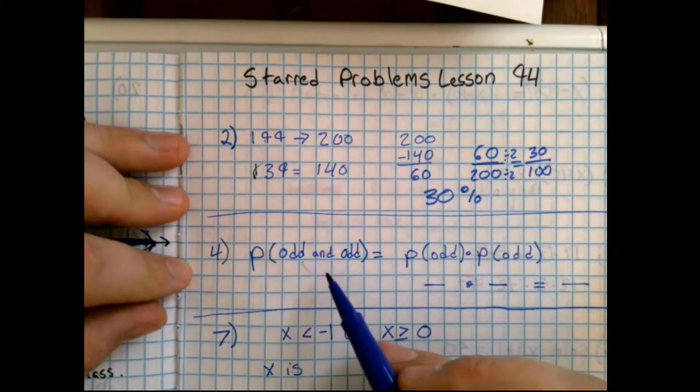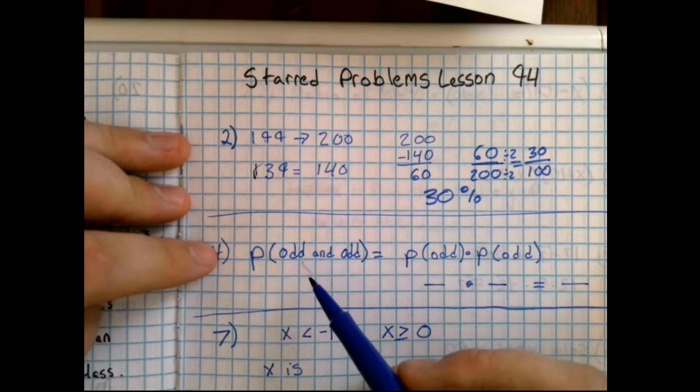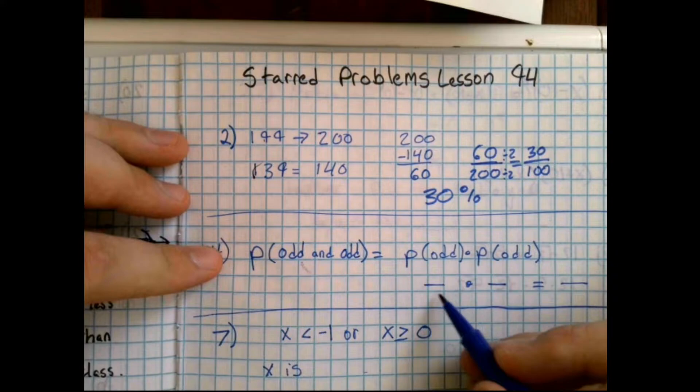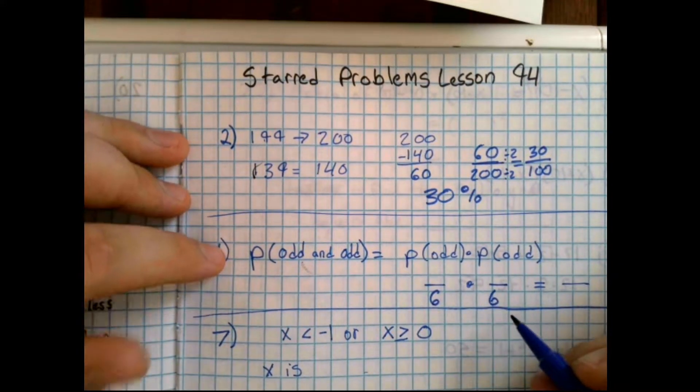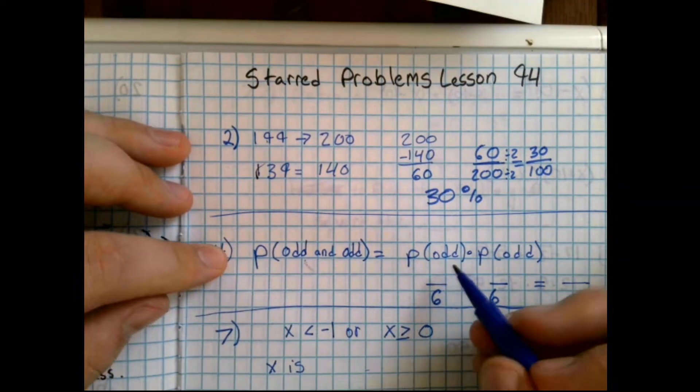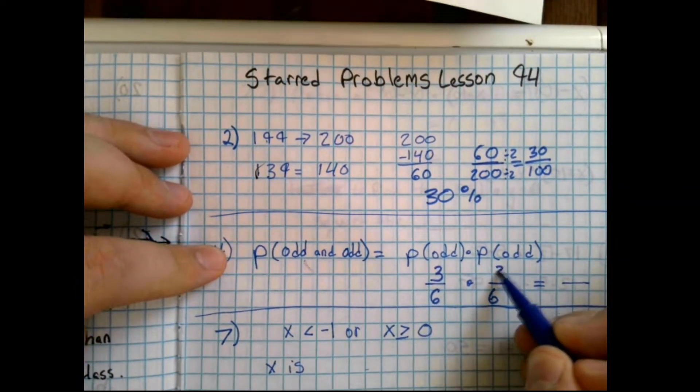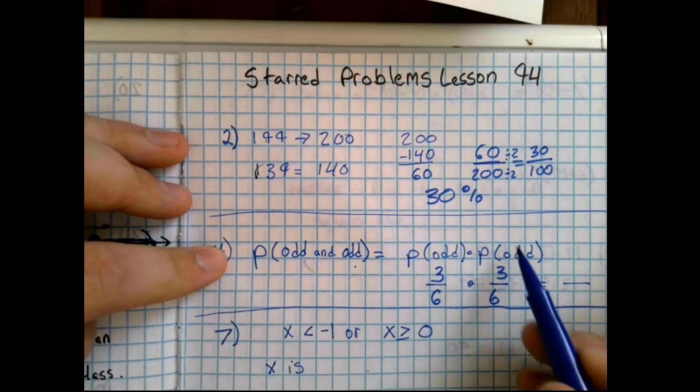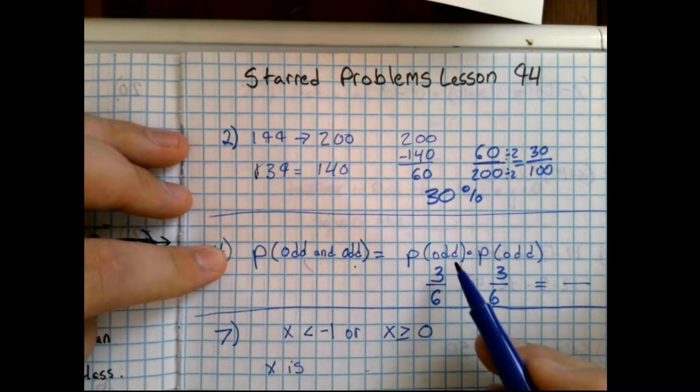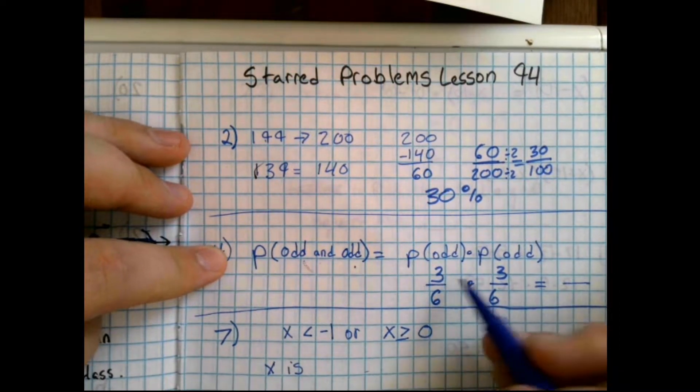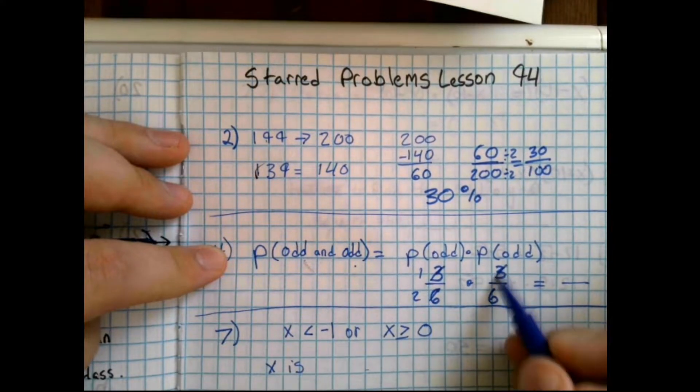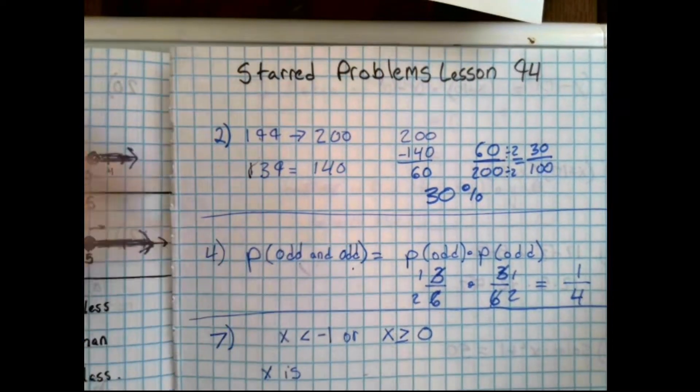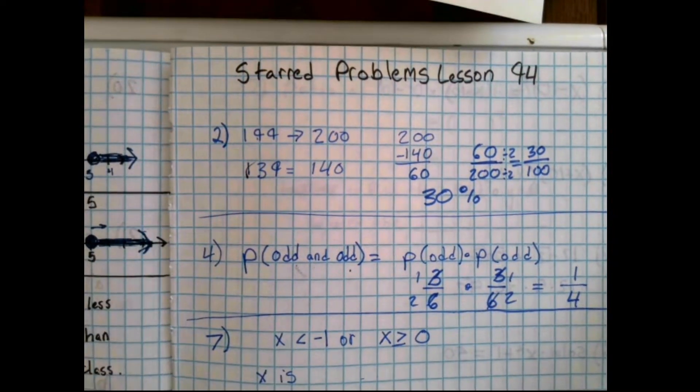Problem number 4 asks for the probability of rolling two number cubes and rolling an odd number on both. Well on a number cube there are 6 numbers, and of those 6, 3 of them are odd: 1, 3, and 5. So to find the probability of odd and odd, we multiply the probability of an odd on one times the probability of an odd on the other. 3 over 6 times 3 over 6, well this can actually be reduced to 1 half and 1 half. 1 times 1 is 1, 2 times 2 is 4, giving us a probability of 1 out of 4 times.